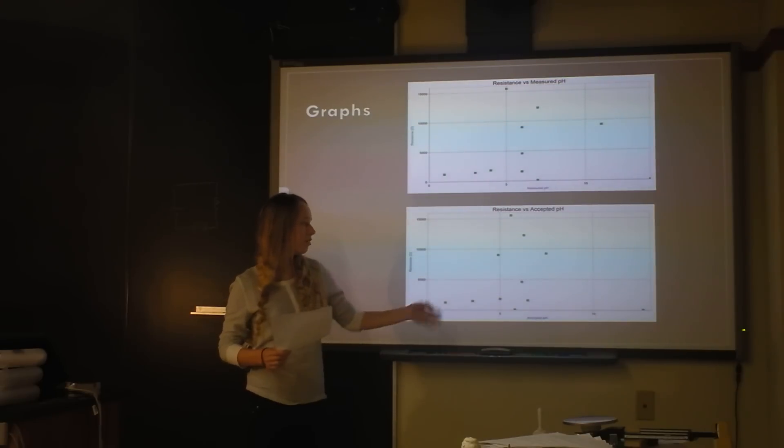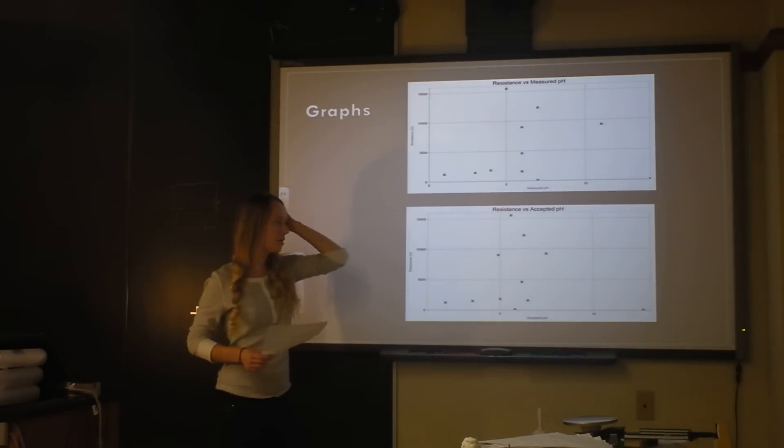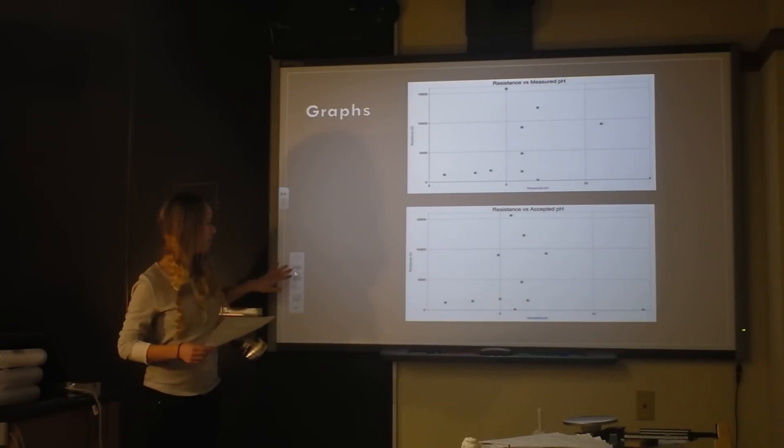And you can see that the ones that have more extreme pH levels tend to be less resistant. But when they were more neutral, they could either be really resistant or very conductive. So this really low dot here is salt water, which has a pretty neutral pH, but it was really conductive. So I had kind of inconclusive results from that.